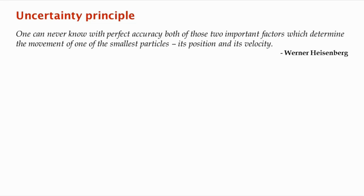So here's the way that Heisenberg formulated his uncertainty principle. He said we can never know with perfect accuracy both of those two important factors which determine the movement of one of the smallest particles, its position and its velocity. So now in what sense did that apply to the double slit experiment?